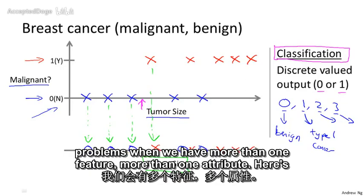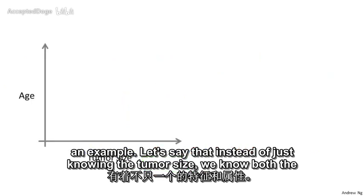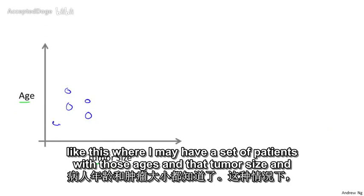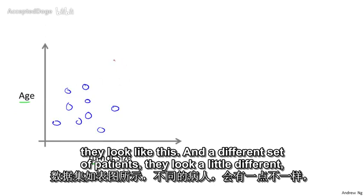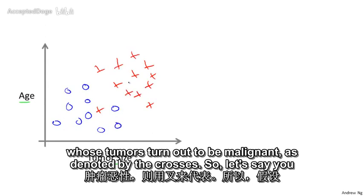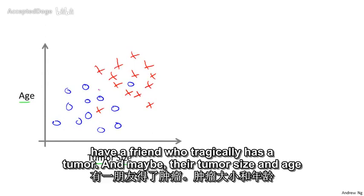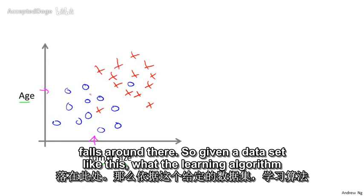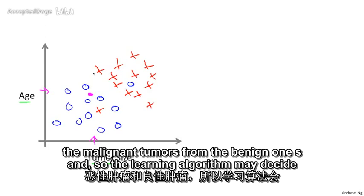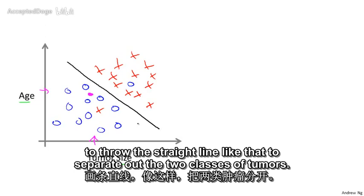In other machine learning problems, we may have more than one feature or attribute. For example, instead of just knowing the tumor size, we know both the age of the patient and the tumor size. In that case, the dataset might have a set of patients with those ages and tumor sizes — some benign and some malignant, denoted by crosses. Given a dataset like this, the learning algorithm may fit a straight line to separate the malignant tumors from the benign ones.